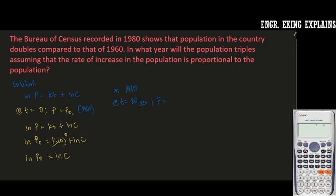So our P is now double, double of the initial, so double of our P sub 0, that will be 2P0. So we have ln P is equal to KT plus ln C, so substituting